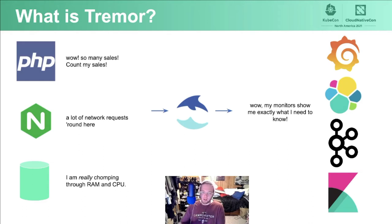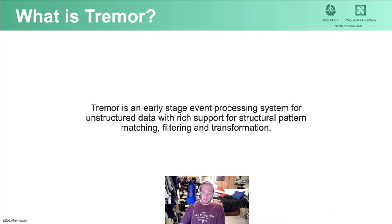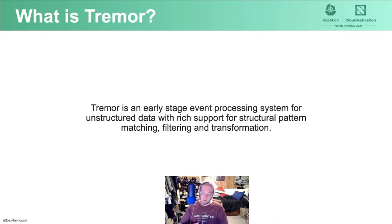So we have on ramps and off ramps and we have these cost savings. Tremor is an early-stage event processing system for unstructured data with rich support for structural pattern matching, filtering, and transformation. Tremor can take a lot of data without breaking a sweat, and it can do this as a sidecar or as a dedicated application. We can use it to process signals before they go through other systems, or after they come out of other systems. We can structure the data, decorate it, shape it, and make it useful — and we can send that data along to the downstream, or rate limit it so that we don't overwhelm our observability pipelines.